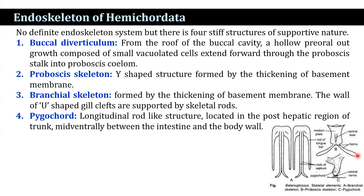The branchial skeleton is also a U-shaped structure. The U-shaped gill clefts are supported by skeletal rods; both primary and secondary gill rods are present.